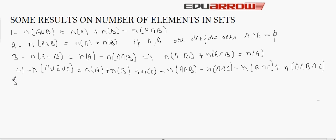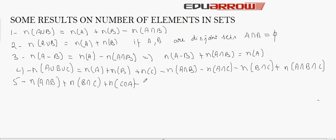The next result gives the number of elements in exactly two of the sets. The formula is n(A intersection B) plus n(B intersection C) plus n(C intersection A) minus 3 times n(A intersection B intersection C).